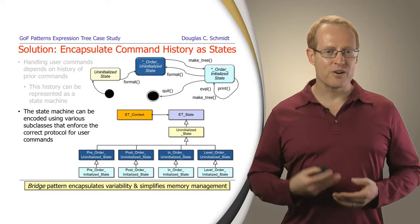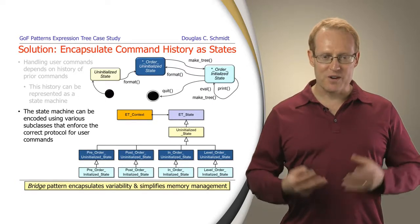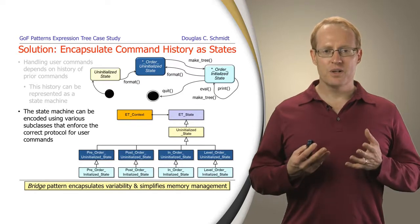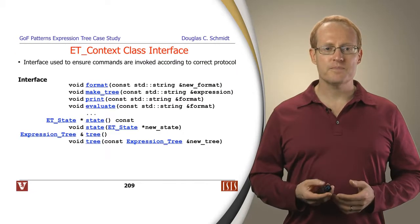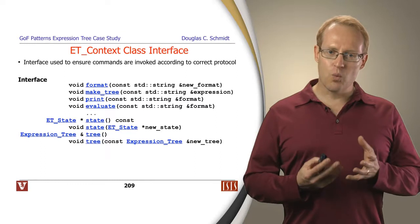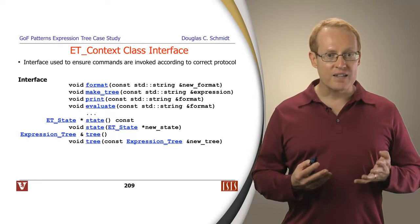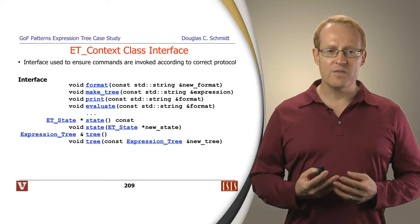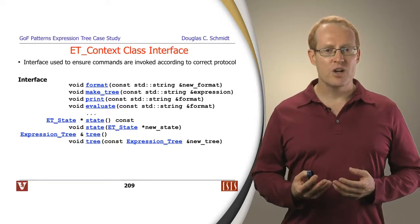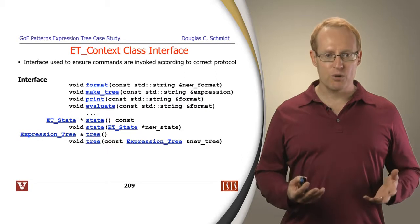And these are reflected in the hierarchy of the classes themselves. As always, we use the bridge pattern to simplify access to all this variability and to be able to simplify memory management. Here is one of the key classes in this particular design. This is called the expression tree context class, or ET context class.